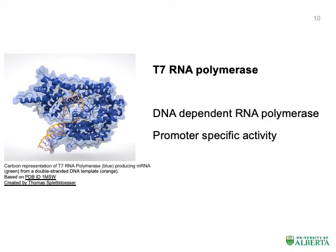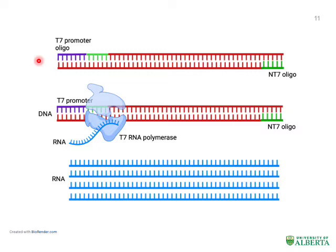Transcription-mediated amplification also uses T7 RNA polymerase, the enzyme pictured on this slide. T7 RNA polymerase is encoded by the T7 bacteriophage. It is a double-stranded DNA-dependent RNA polymerase that is extremely promoter-specific and transcribes only DNA downstream of a T7 promoter. In TMA, the T7 RNA polymerase recognizes the T7 promoter oligo and initiates transcription, resulting in the synthesis of multiple copies of RNA having the same sequence as the original rRNA target.